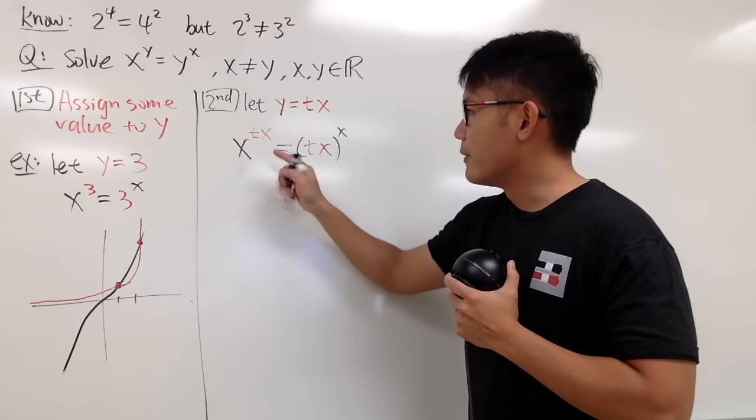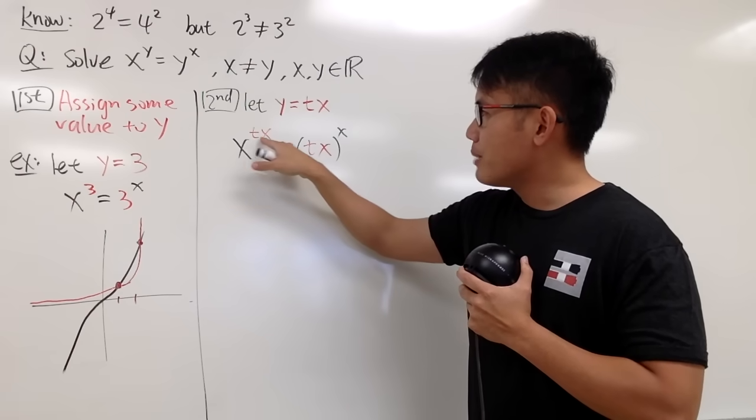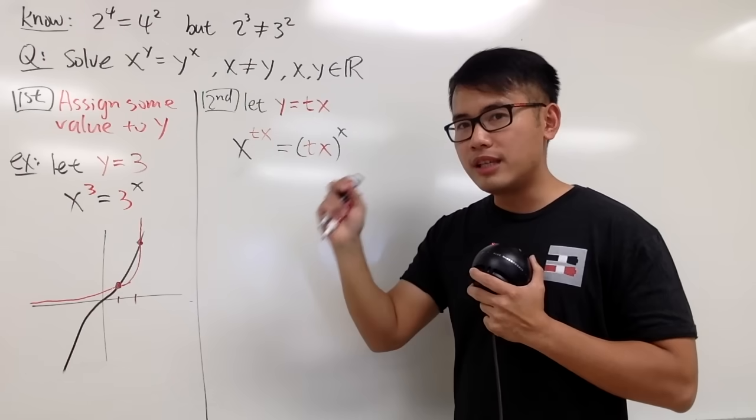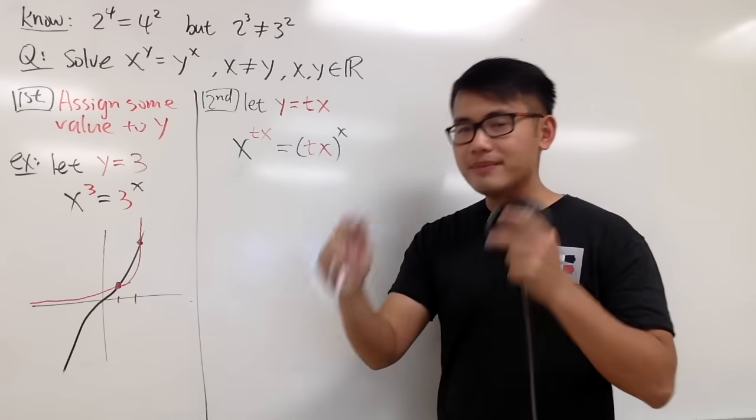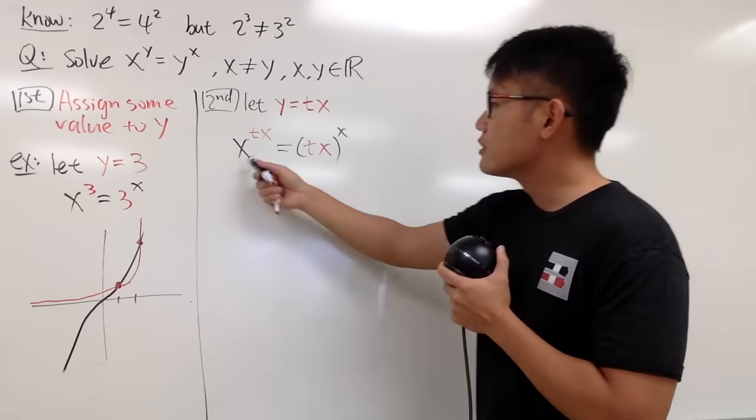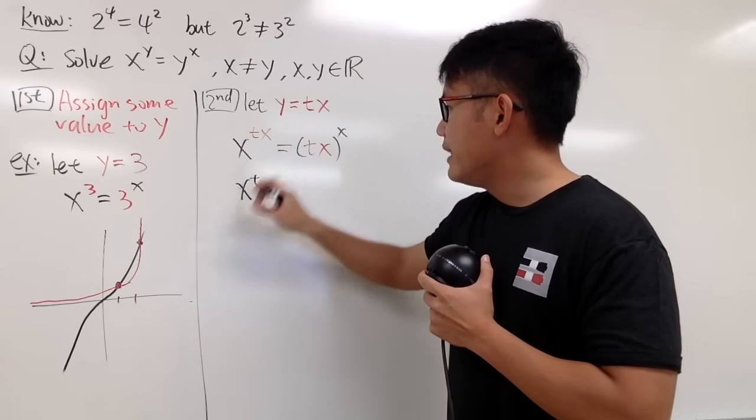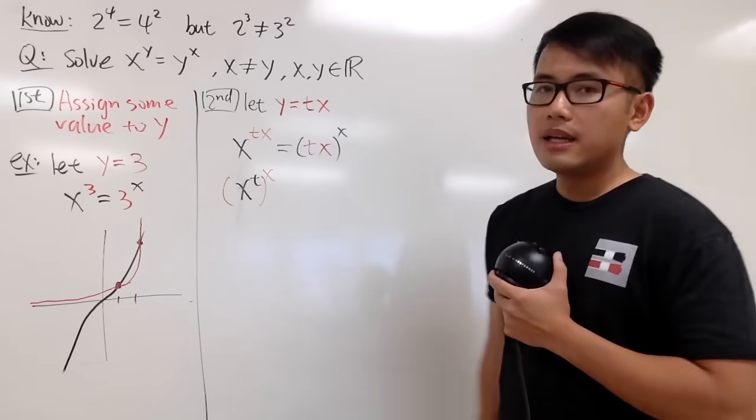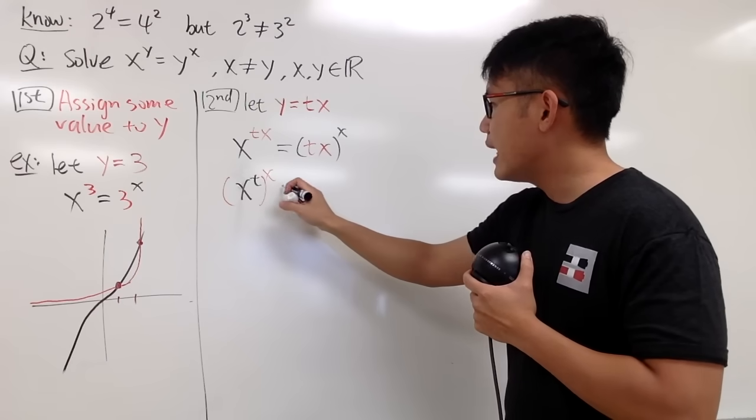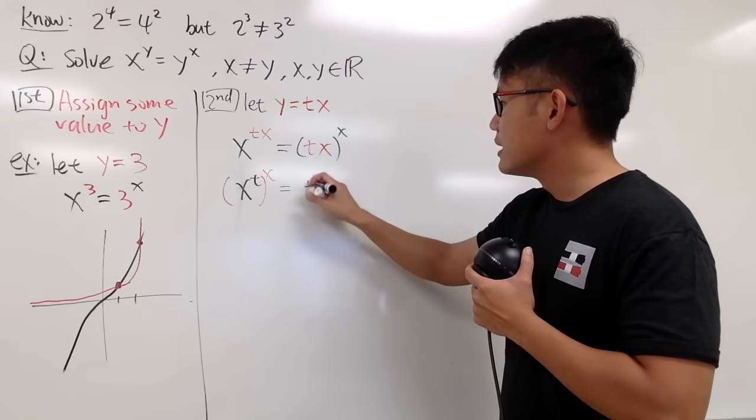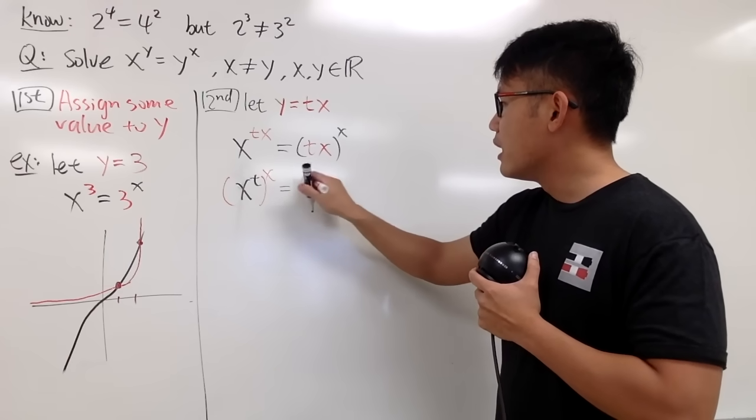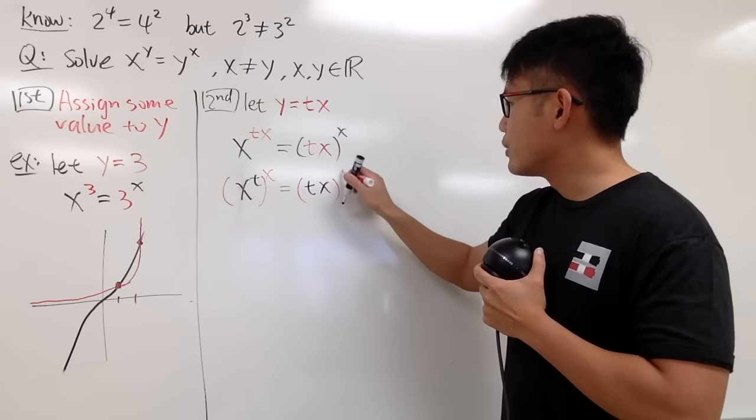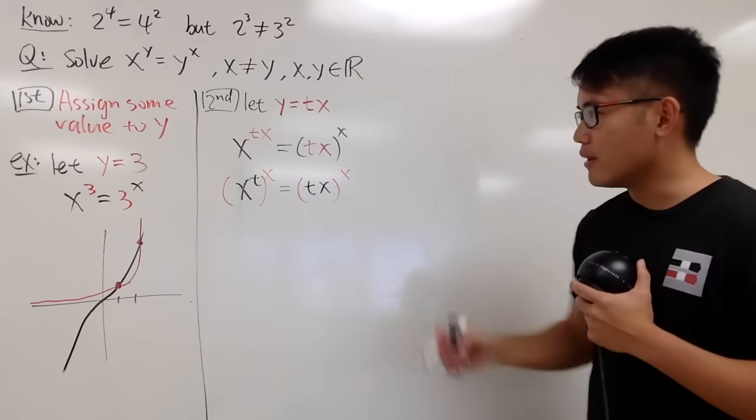But, look at this right here. When we are multiplying the powers, I can look at this as x to the t power, in the parentheses, and then raise to the x power, right? So I will change that, and then raise to the x power, like that. And on the right-hand side, I will just write this down as tx for the base right here, and then raise that to the x power. I'm not changing anything except for the colors.